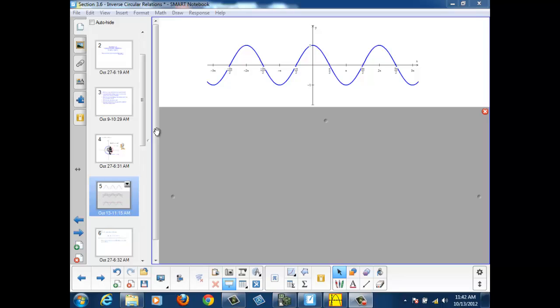Here's another way to look at the problem. If I graph the cosine function, as I have here, and then I say, when is that cosine function equal to 0.3?